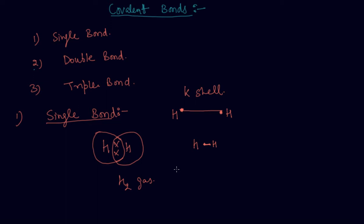Similarly, chlorine forms a diatomic molecule Cl₂. The atomic number of chlorine is 17, so it has seven electrons in the outermost shell, which is the M shell. The electrons are arranged like this in chlorine.